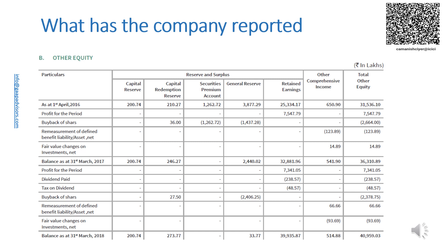Division 2 and Division 3 of Schedule 3 to the Companies Act 2013 requires a company to present Total Comprehensive Income for the current year and previous year as a separate line item. The same requirement is there in Para 106 of Ind AS 1.